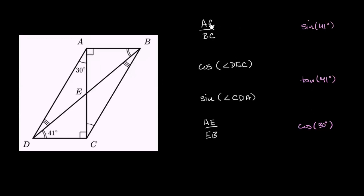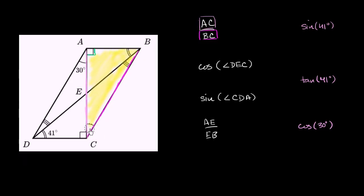Let's look at the length of segment AC over the length of segment BC. AC is this length here in purple, and BC is this length here. So it's the ratio of the lengths of two sides of a right triangle — triangle ABC — which is clearly a right triangle. It's reasonable that the ratio of two sides will be the sine of one of its angles, and they give us one of the angles.